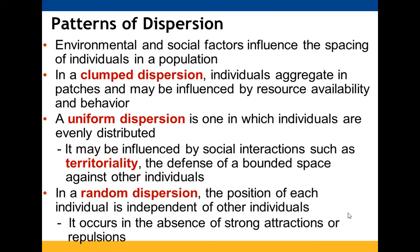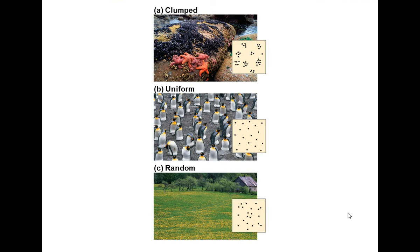Environmental and social factors influence dispersion patterns. In clumped dispersion, individuals group together in patches, often influenced by resource availability or behavior. Uniform dispersion is when individuals are distributed evenly throughout a given area, which may relate to territorial defense. In random dispersion, each individual is independent of the others — nothing pushes them toward or away from one another. So you have clumped, uniform, and random dispersion.